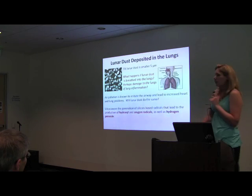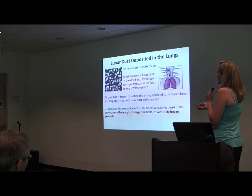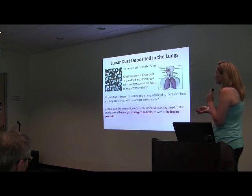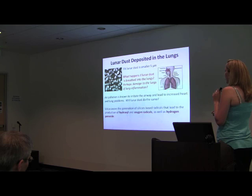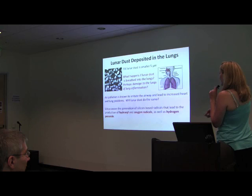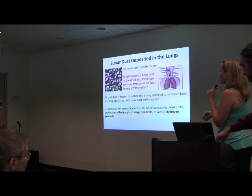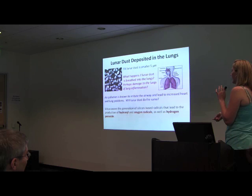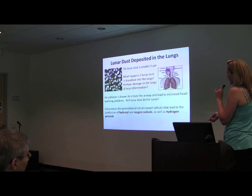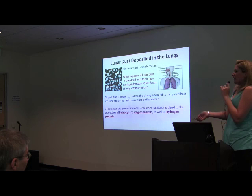The 5% of lunar dust smaller than 5 microns is the fraction we can breathe into the deep regions of the lungs. What happens when we breathe it in? Most likely there will be lung inflammation. Air pollution is known to irritate the airways in ways that lead to both lung and heart problems. Will lunar dust do the same? Also, with silica: we have quite a bit of evidence from silica mining and fresh fractured silica — will those reactive surface molecules cause silica-based radicals leading to the production of hydroxyl radicals and oxygen radicals, and ultimately hydrogen peroxide forming in the lungs?